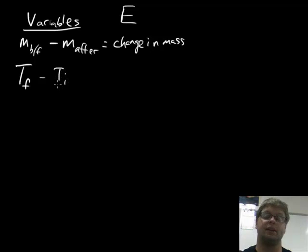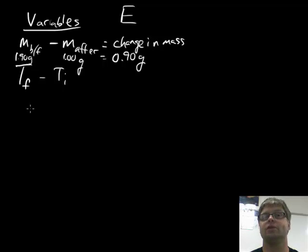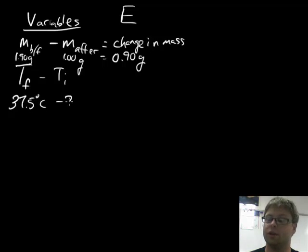Now some sample data we looked at, and again your data may be different than this. The mass before of the Cheeto might have been 1.90 grams, the mass after might have been 1.00 grams, and the change in mass the difference between those 0.90 grams. For the temperature, we did the same thing. We measured the water beforehand. We had to be careful not to touch the container when it was in. We just measured the water. So if we got data here, the temperature final might have been something like 37.5 degrees Celsius.